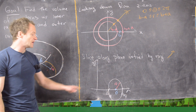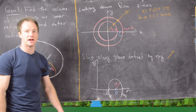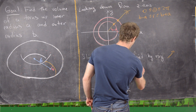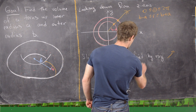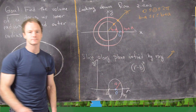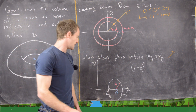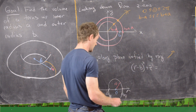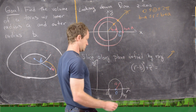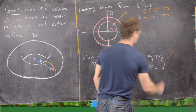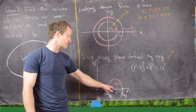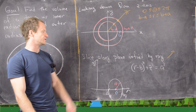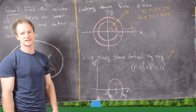We know the equation of a circle in that r-z plane. It's given by (r minus B) squared plus z squared equals A squared. The center of the circle is (B, 0) and the radius is A, so we've used the standard formula for a circle.